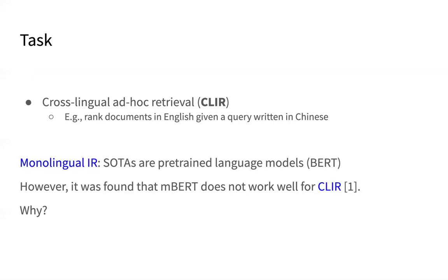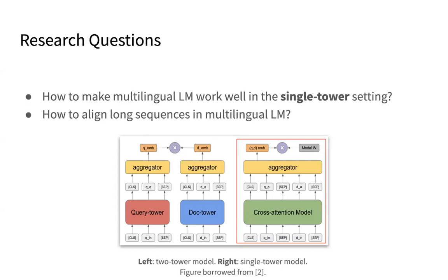The core task of this work is an old problem called cross-lingual ad hoc retrieval, CLIR. Basically, we want to rank documents written in one language given a query written in another language. The motivation of our work is that pre-trained language models such as BERT are the dominant force in monolingual IR. However, it was found that multilingual BERT does not work well for CLIR, and we wonder why, and we want to shed light on this old problem.